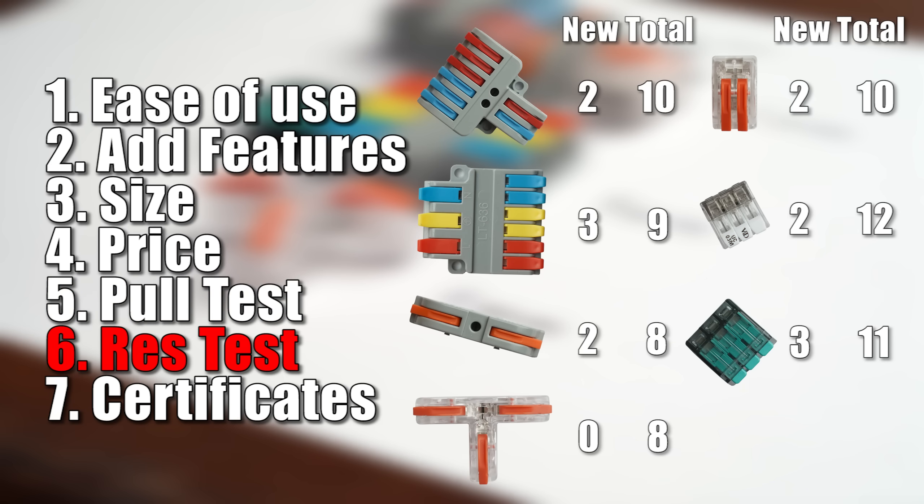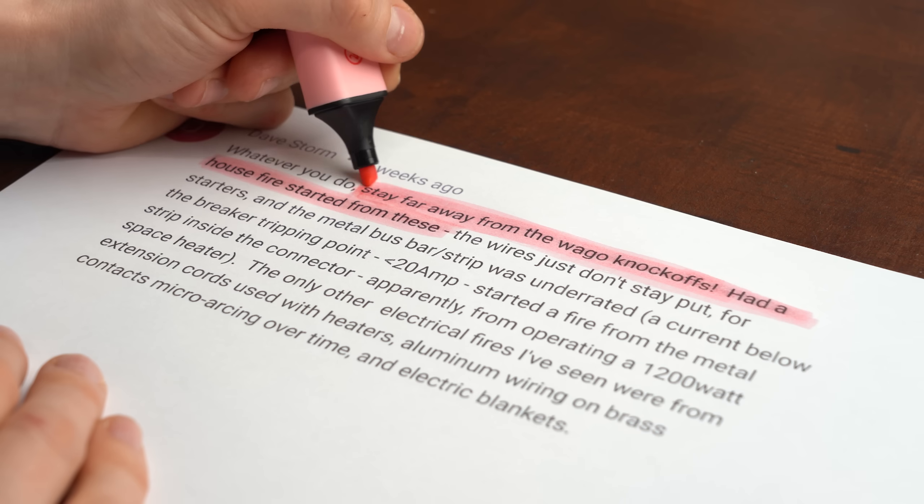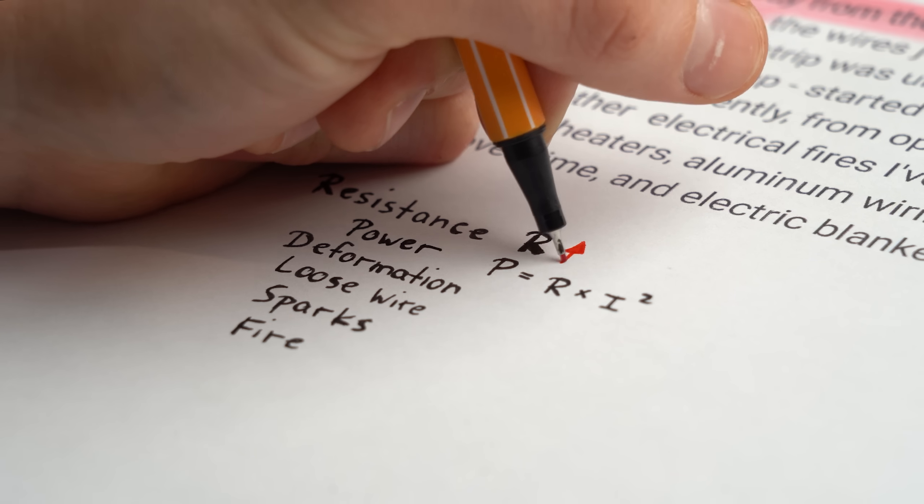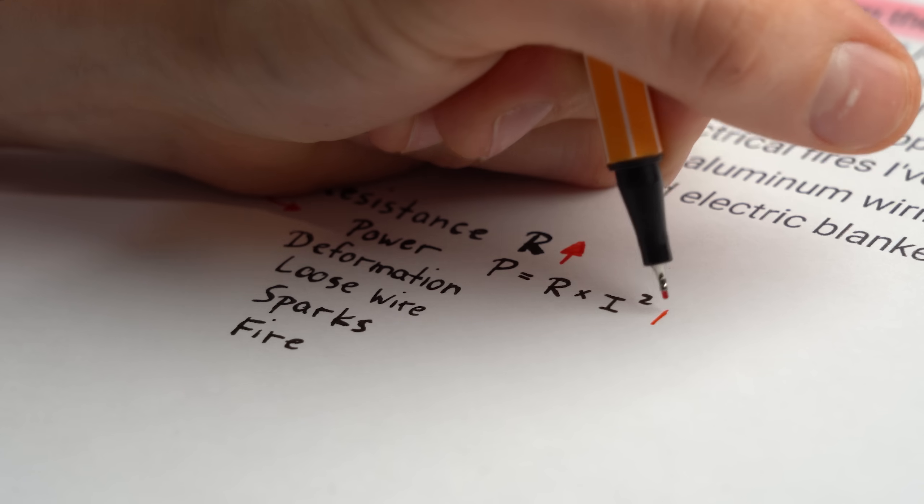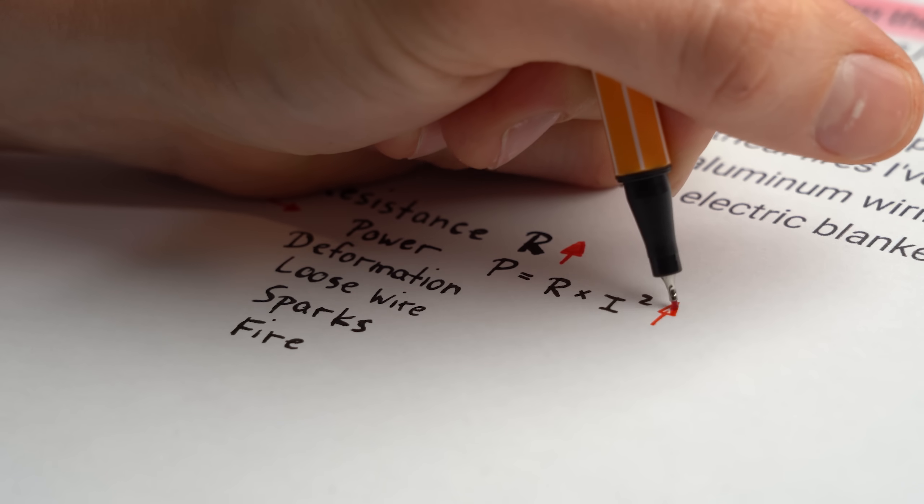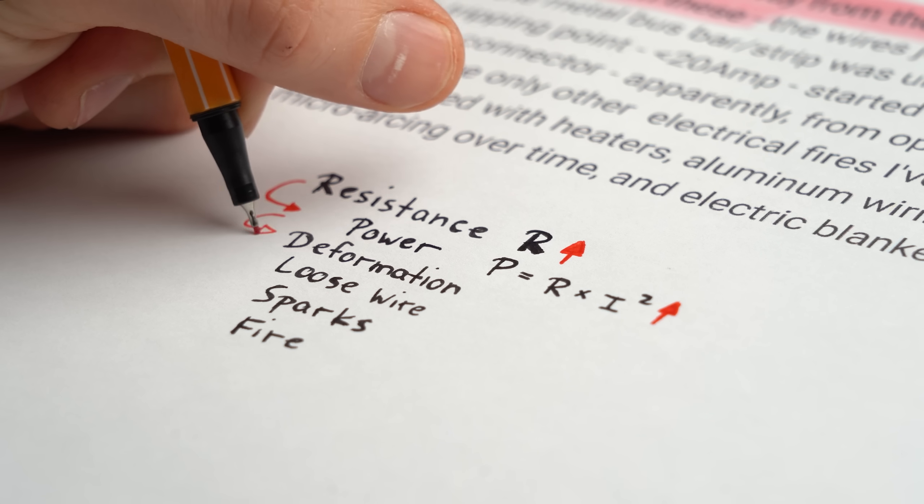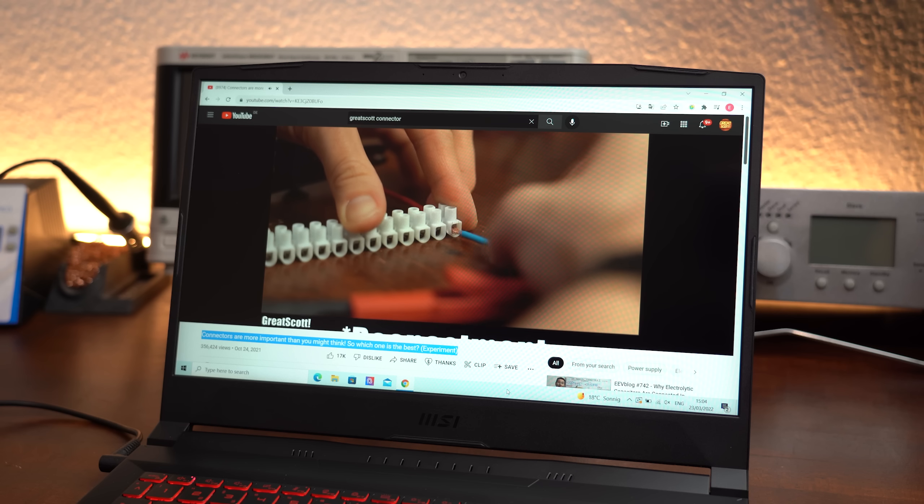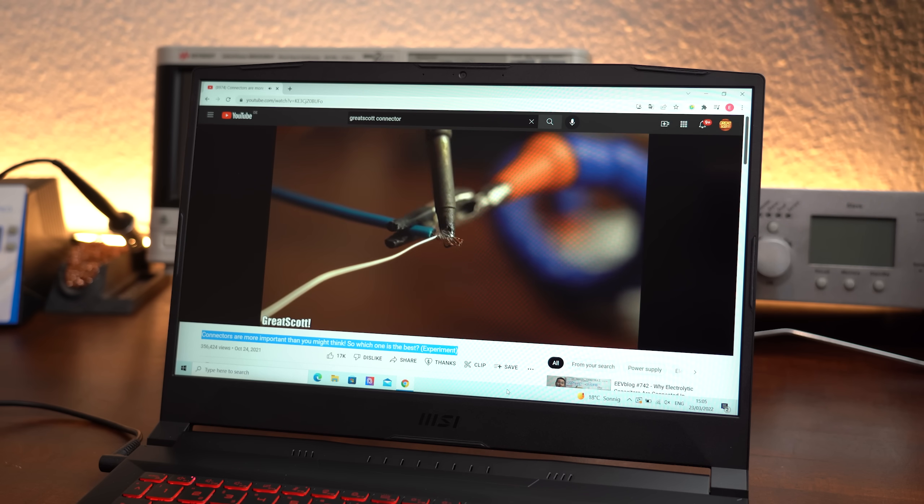So after adding the new points, it was time for the super important resistance test which is related to the comment we began with about starting a fire. You see, the higher the resistance, the bigger power losses get produced inside the connector, which eventually can lead to deformation, a loose wire, sparks, and ultimately a fire. And if that sounds too unrealistic for you, then definitely watch my video about different connector types and wire ferrules.